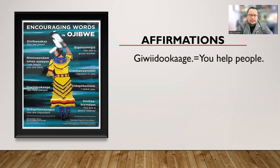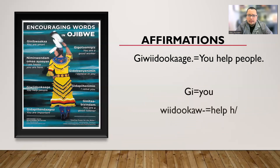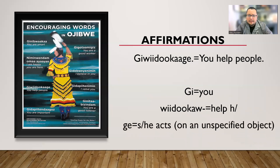Next one: 'Giwii-wiidookaage' — you help people. 'Giwii-wiidookaage.' Talking about you — 'wiidookaw' is our word meaning to help him or her, and '-ge' means he or she acts on an unspecified object. So you are the one helping someone — we don't know who, it's unspecified, so in this case it means people — could be anybody. 'Giwii-wiidookaage.'